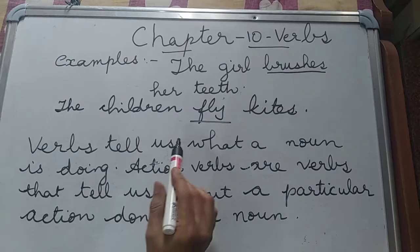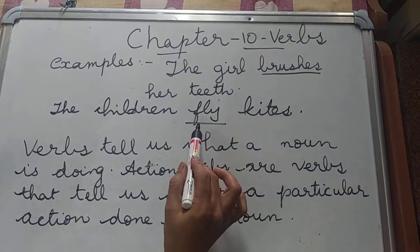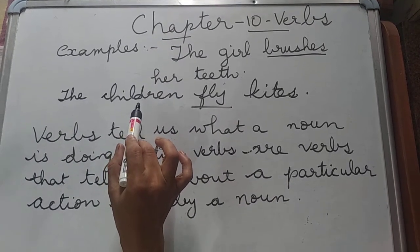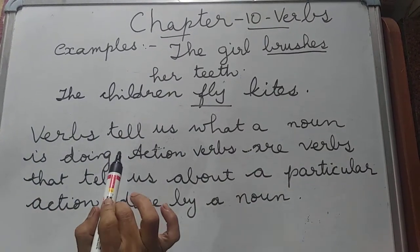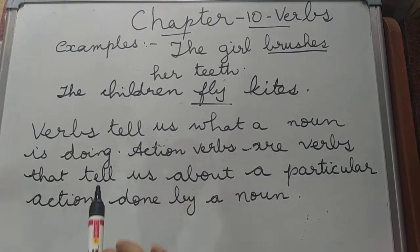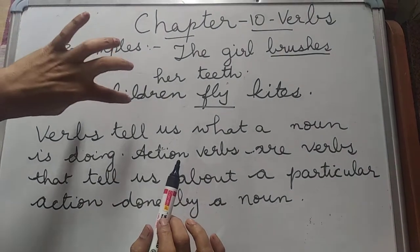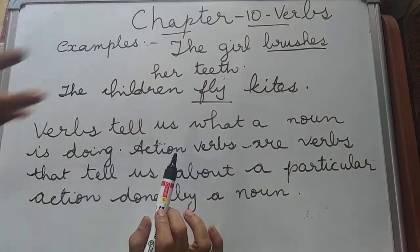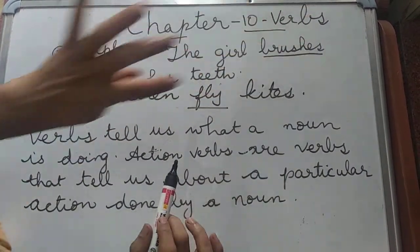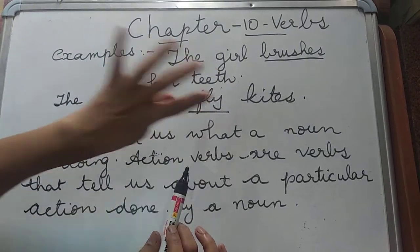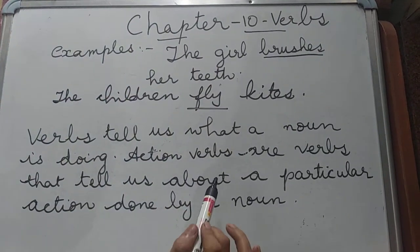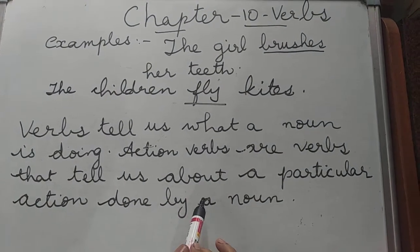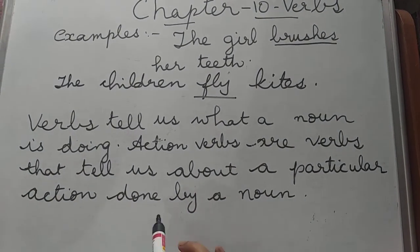The children fly kites — the verb is fly. The children is the noun. Verbs tell us what a noun is doing. Here the noun is the children; the action is fly. The girl is the noun; the action is brushes. Action verbs are verbs that tell us about a particular action done by a noun.